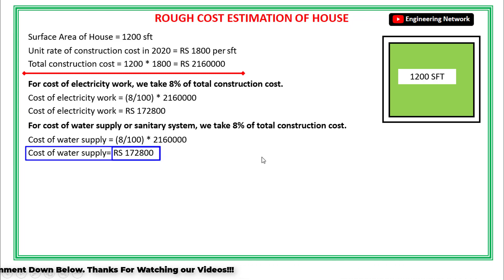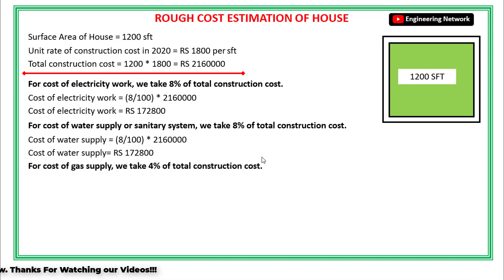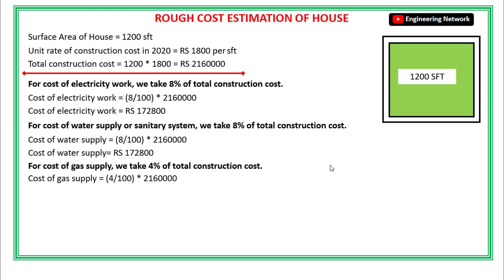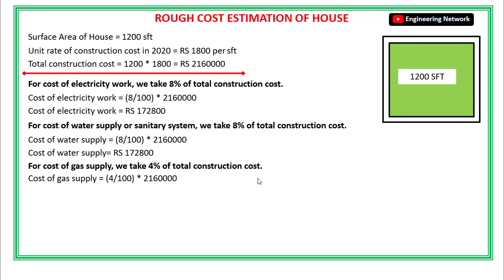Next is the cost of gas supply. For gas supply, we usually take 4% of the total construction cost. So the total cost of gas supply is equal to 4 divided by 100, multiplied by 21,60,000, and the total cost of gas supply will become 86,400 rupees.